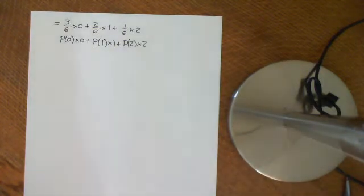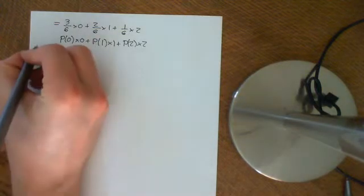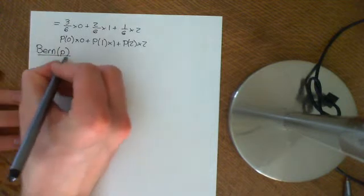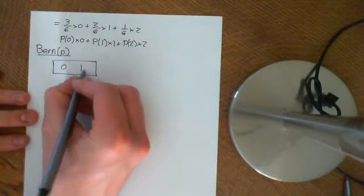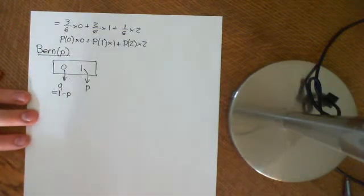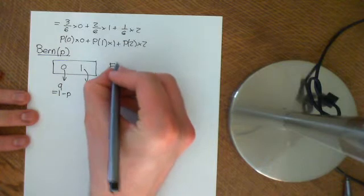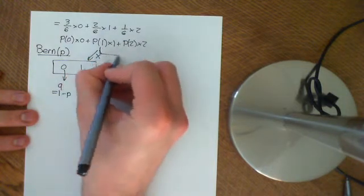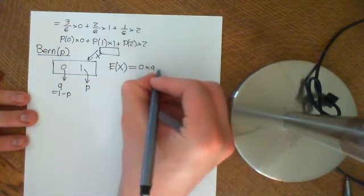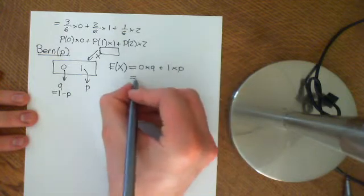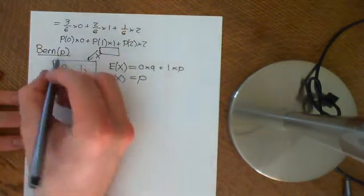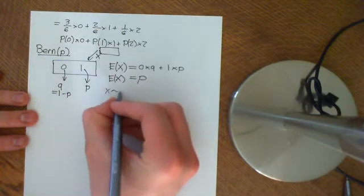Now let's take the expected value of some distributions we've covered. Let's do the expected value of the Bernoulli distribution. The Bernoulli distribution with parameter P has probability space {0, 1}, where 1 maps to P and 0 maps to Q, or one minus P. The expected value of X is zero times Q plus one times P, which equals P. So the expected value of any random variable distributed as Bernoulli(P) is P.